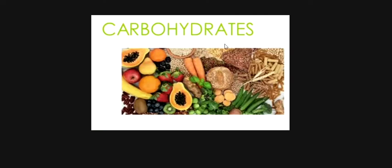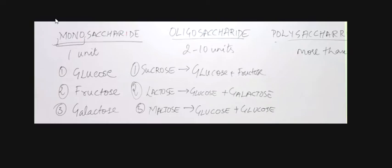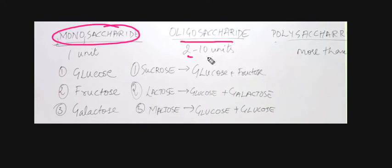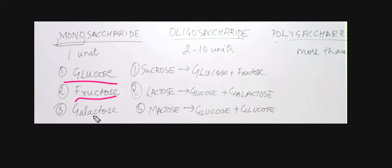First of all, carbohydrates. The basic unit of carbohydrates is saccharides. If it is one saccharide, we call it a monosaccharide. If it is one unit, monosaccharide. Two to ten units would be oligosaccharides. Monosaccharides are glucose, fructose, and galactose.